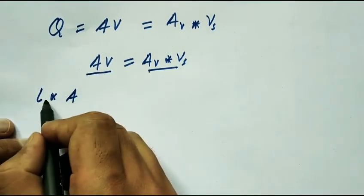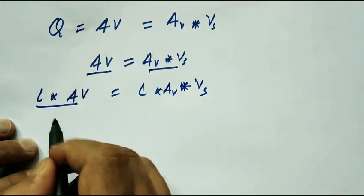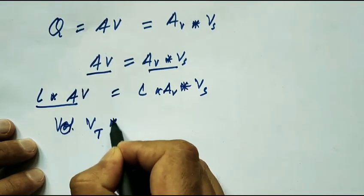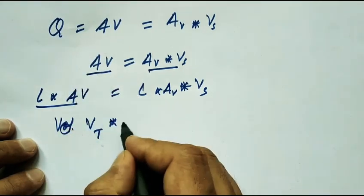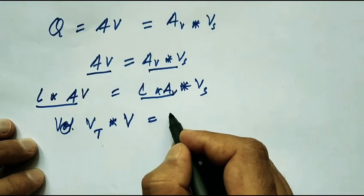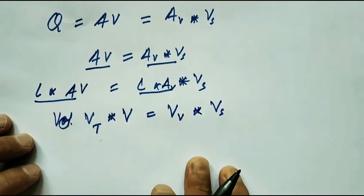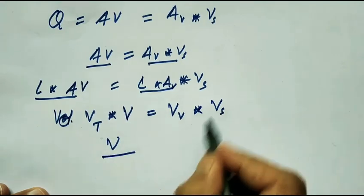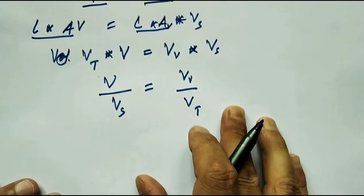Multiplying both sides by length L: L into A into V equals L into A_V into Vs. Area into length is volume, so A times L is total volume Vt, and A_V times L is volume of voids Vv. Therefore: Vt times V equals Vv times Vs. Rearranging: V divided by Vs equals Vv divided by Vt.